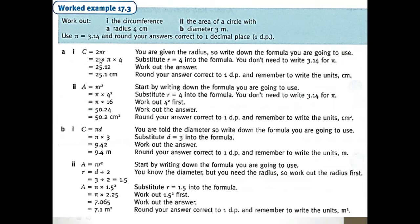If you have a radius that is 4, you use the formula C equals 2 pi R, because D equals 2R. So we write 2 pi R here instead of D. We know 2 pi is approximately 3.14 and R is 4, so when we multiply we get the circumference.